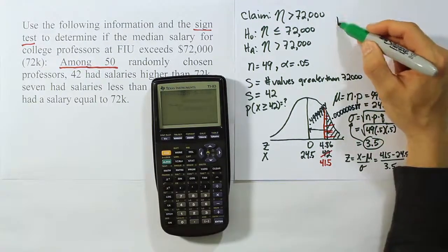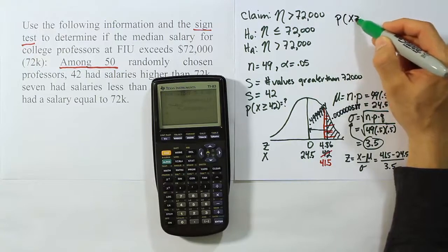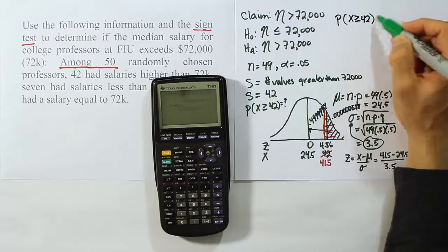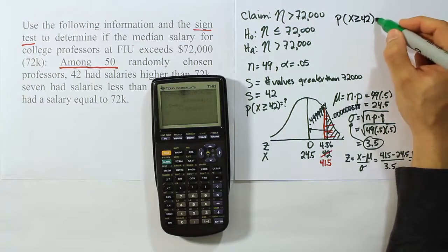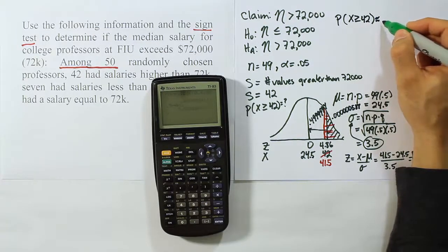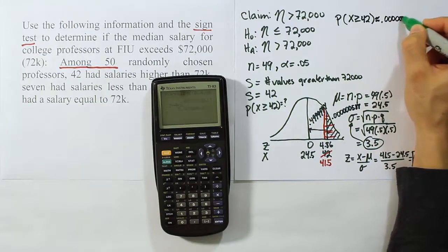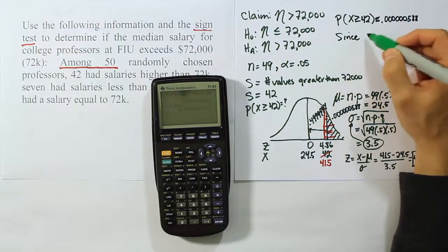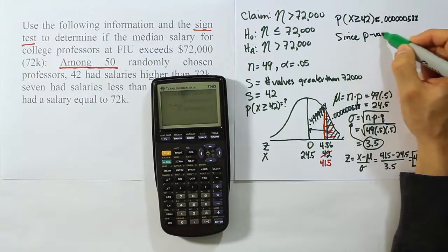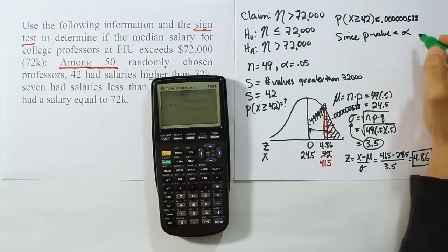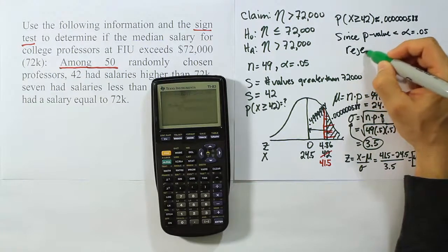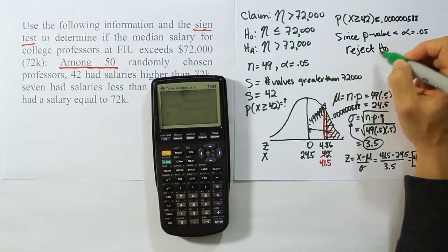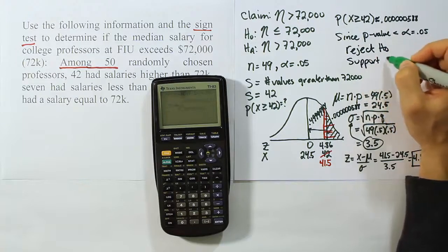Our p-value, the probability that x is greater than or equal to 42, that works out to be basically approximately equal to .000000588, a very small p-value. And since the p-value here is less than alpha, since the p-value is less than alpha, which is .05, we are going to say that we reject H0 and therefore support HA.